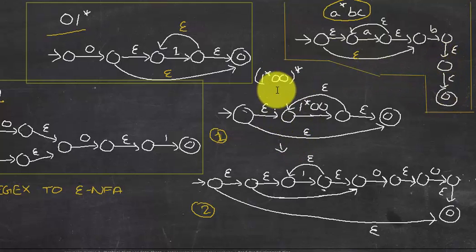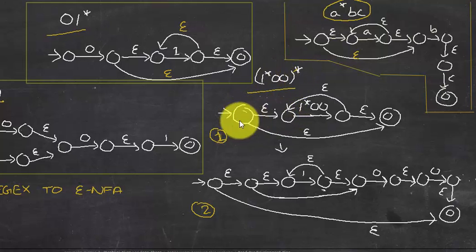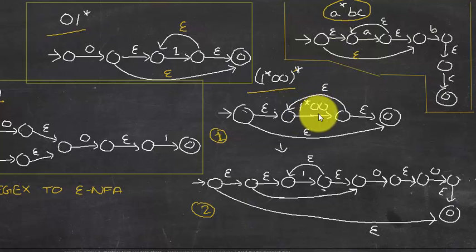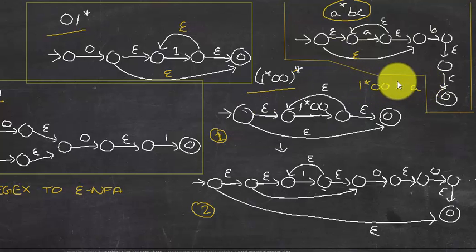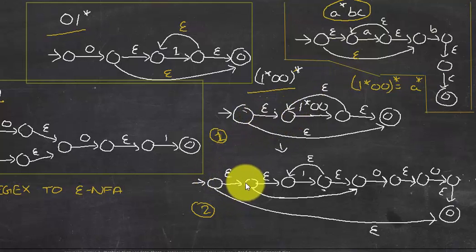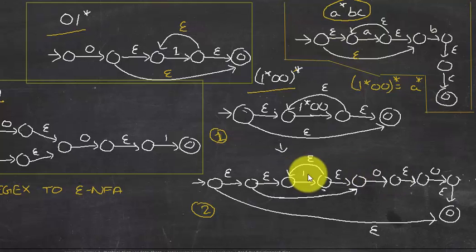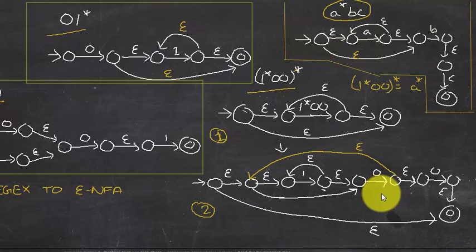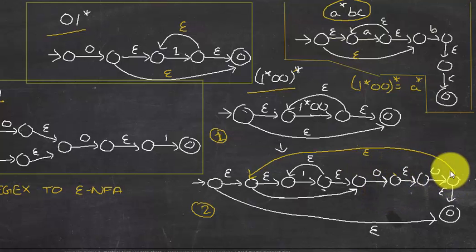The final example is more complex, so it's broken into two steps. It has an outer Kleene closure containing 1*00. First, write the epsilon transitions for the outer closure: epsilon at the beginning, epsilon at the end, epsilon going back, and epsilon going directly to the accepting state. Treat 1*00 as a single unit inside the closure.